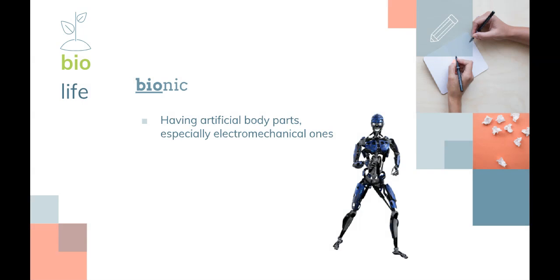Bionic means having artificial body parts, especially ones that are electromechanical. In that picture, that robot would be bionic — it has artificial body parts. Electromechanical means ones that move with electricity.